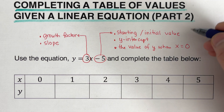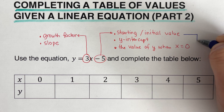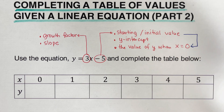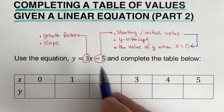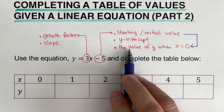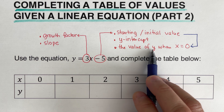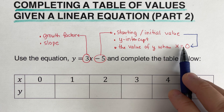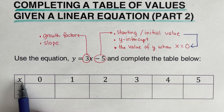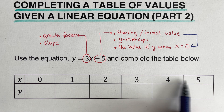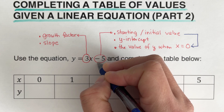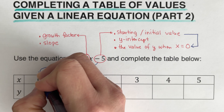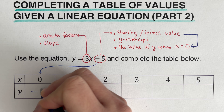Now, the starting or initial value is where we start when x is zero. So looking at this equation, negative 5 should always go to the value of y when x is zero. We look at the x row, find zero, and that is right here — so we write negative 5 in that column.